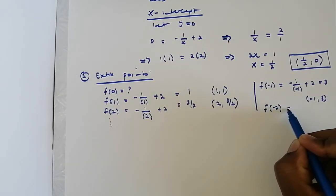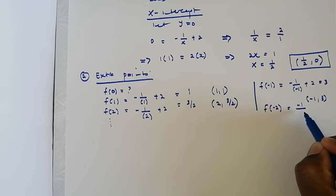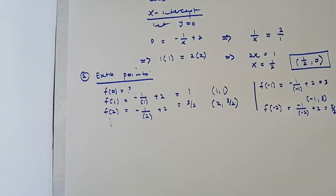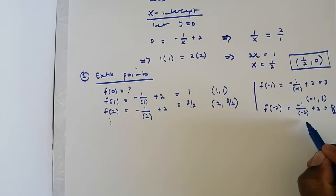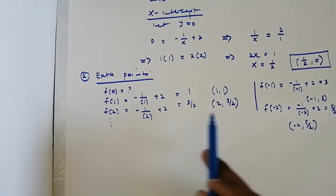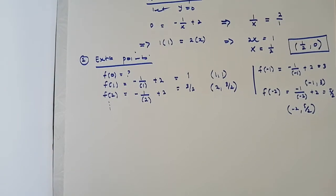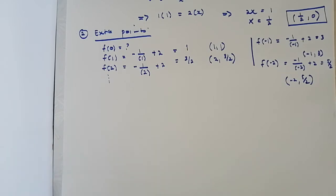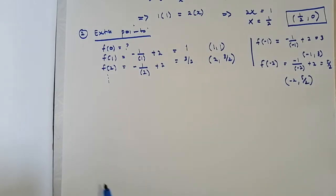f(-2) equals negative one divided by negative two plus two, which is negative one divided by zero — that is undefined. So the point at x equals negative two is undefined. If they never asked you to find extra points you can just ignore them, or do them if you feel like it.